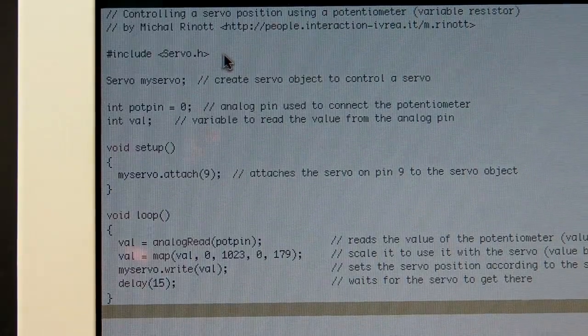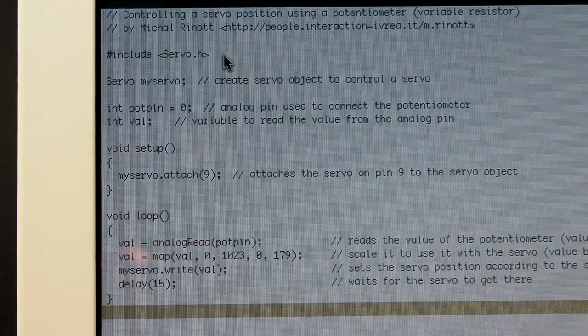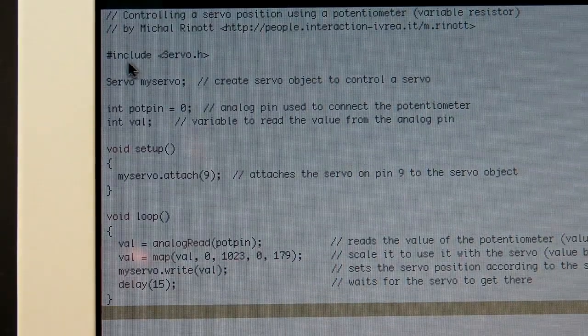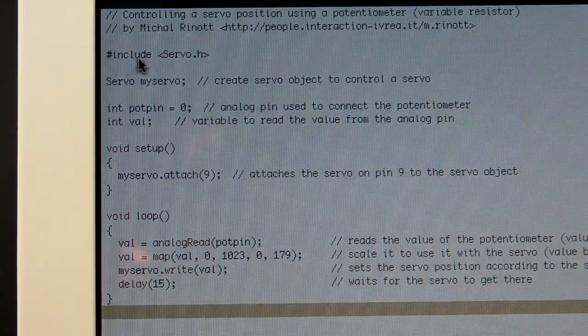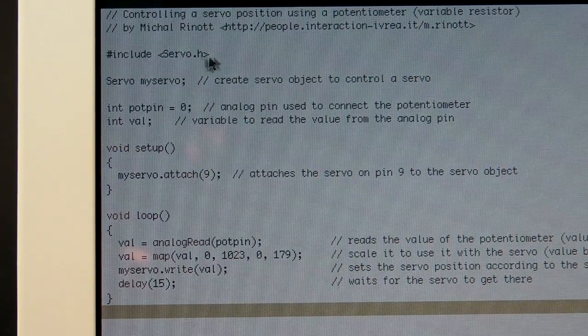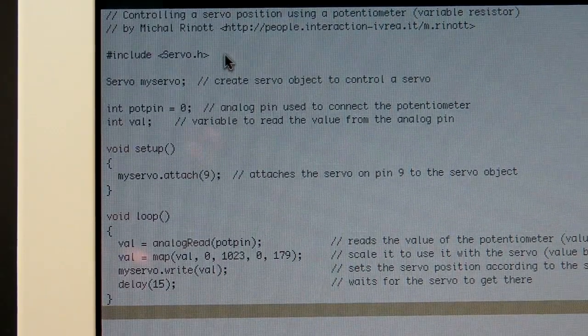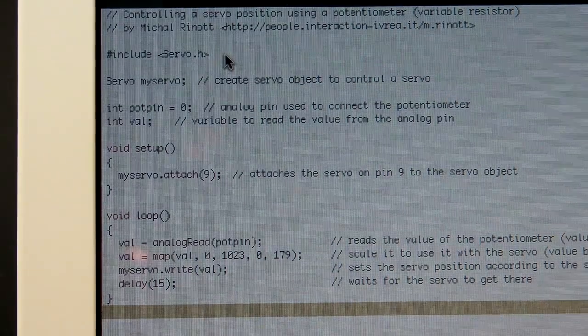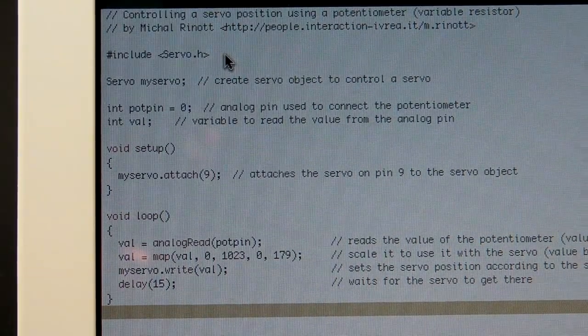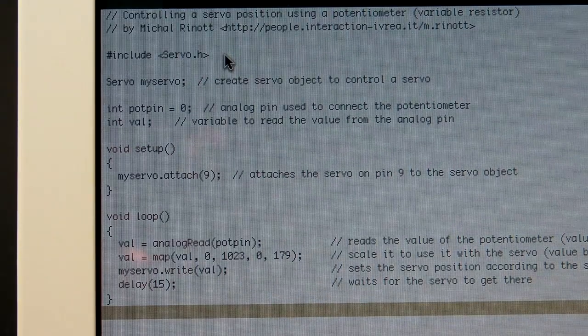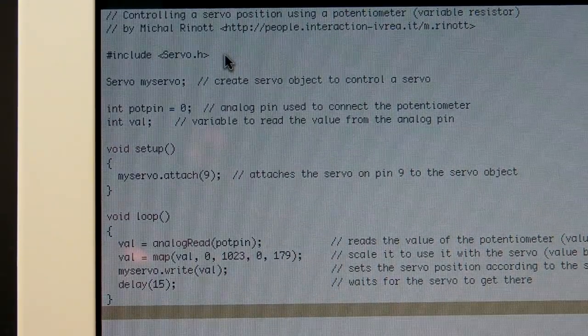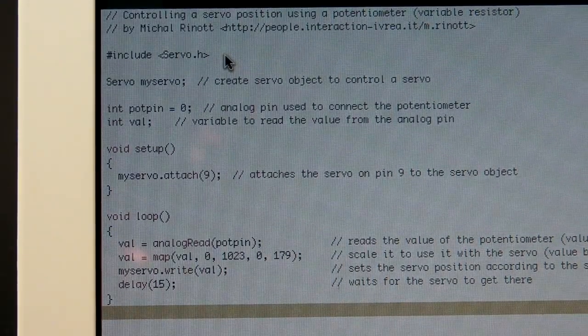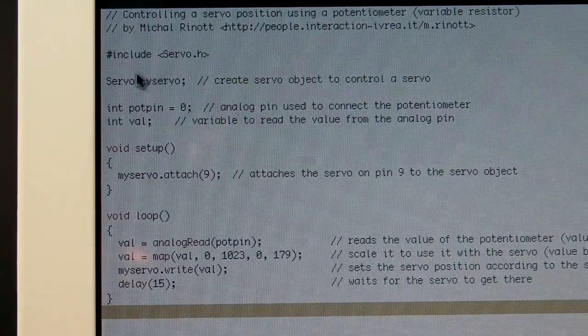Okay, so let's quickly go over the software. The first thing to notice here in the program is you have the pound symbol include servo.h. What's really cool about the Arduino and what makes it really powerful are the libraries, and this is the servo library. This allows you to talk with the servo and control it really, really easily. We're going to go in depth on that on a later date. For now, just know what it is and know what it does.